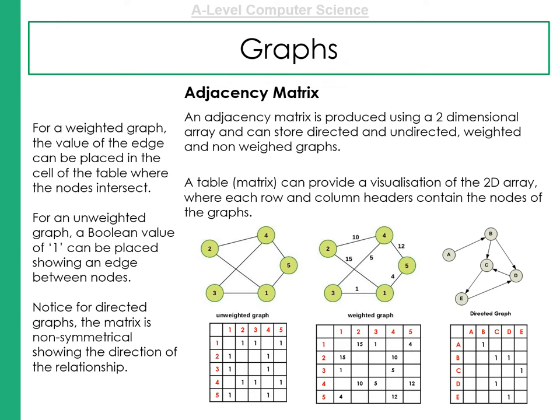You can see three examples here. First of all, for a weighted graph, the one in the middle. The value at the edge can be placed in the cell of the table where the nodes intersect. So if you look here, we can see that 2 to 4 is 10. We look across the way to find 2, and then down the columns to find 4.